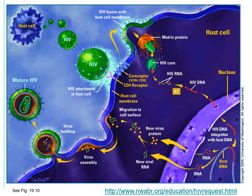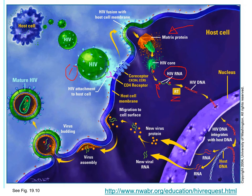Step one: the glycoprotein recognizes the CD4 receptors on the white blood cell and the virus gets inside the cell. The matrix and capsid proteins dissolve when they hit the cytoplasm, leaving naked viral RNA. That viral RNA carries reverse transcriptase, which converts the viral RNA into viral DNA. The double-stranded DNA goes in through a nuclear pore and gets incorporated into part of the host genome - that's done by the integrase enzyme.